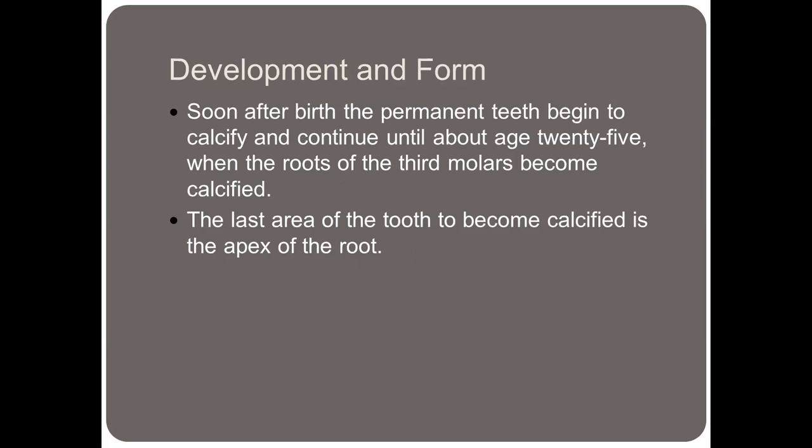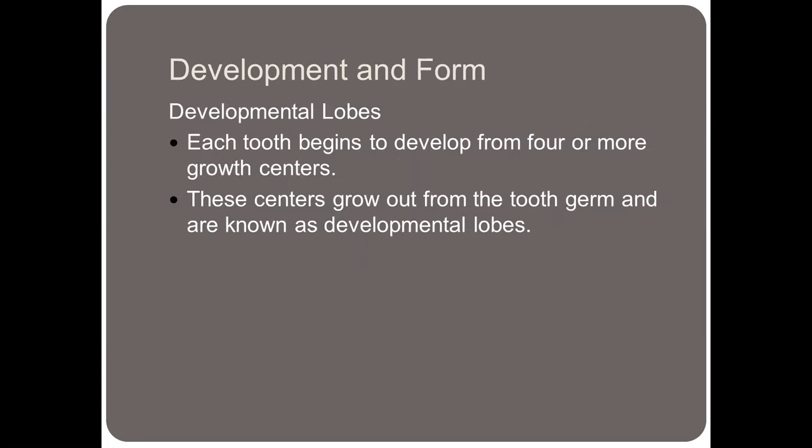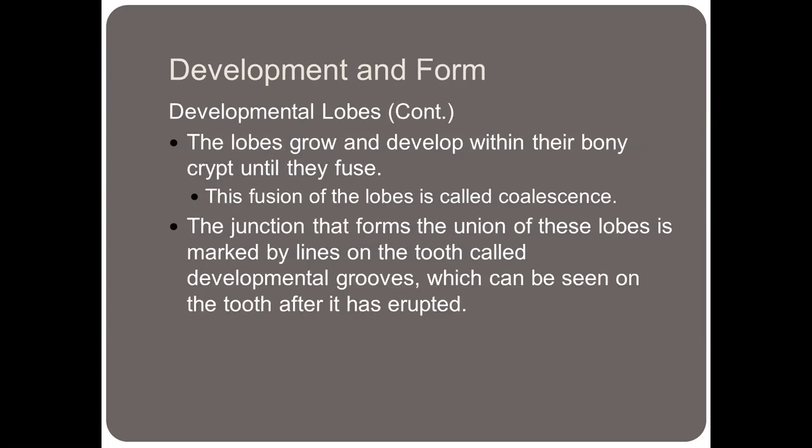The last area of the tooth to become calcified is the apex of the root, where you have your cellular cementum. Each tooth begins to develop from four or more growth centers, and these growth centers grow out from the tooth germ and are known as developmental lobes. The lobes grow and develop within their bony crypt until they fuse, and it's this fusion of the lobes that's called coalescence. The junction that forms the union of these lobes is marked by lines on the tooth called developmental grooves, which can be seen on the tooth after it has erupted.